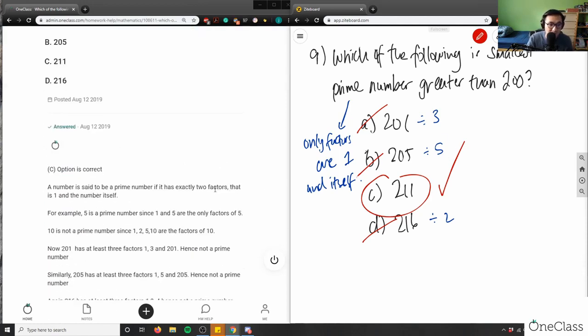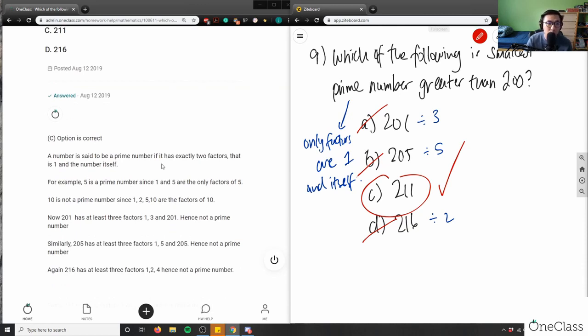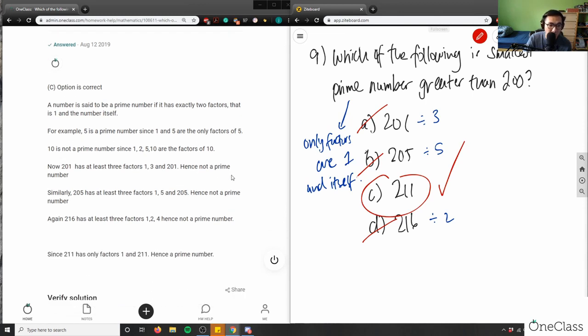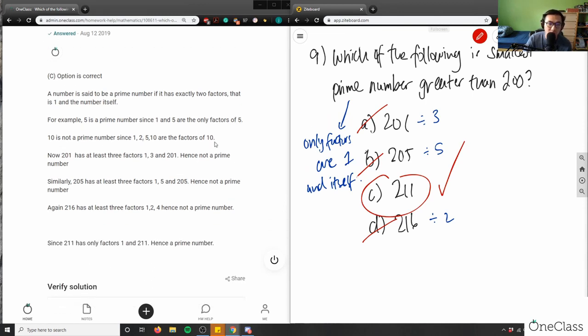That's awesome. C is correct. It says here, a number is a prime number if it has exactly two factors, one in itself. For example, 5 is prime number, and 1 and 5 are only factors of 5. 10 is not a prime number.